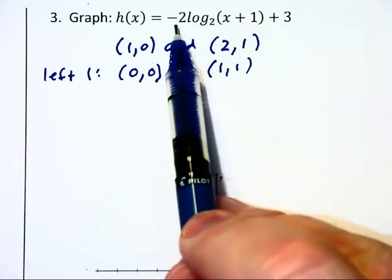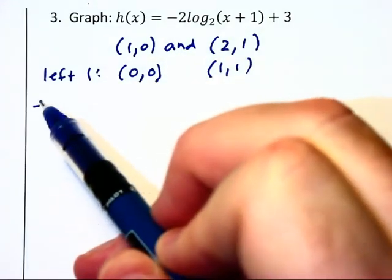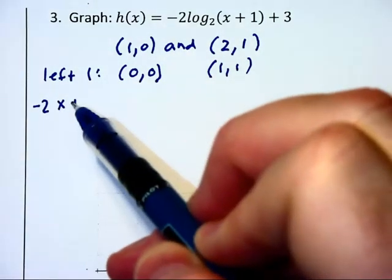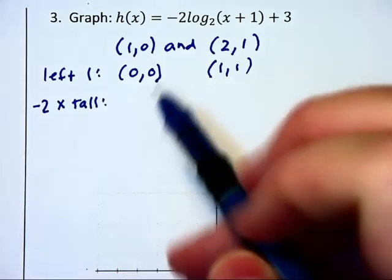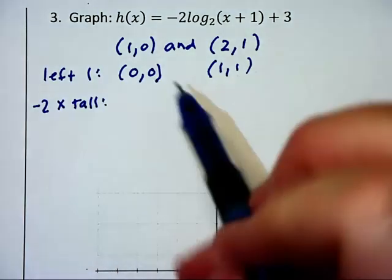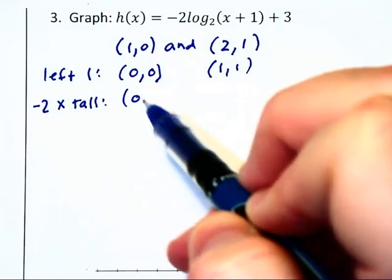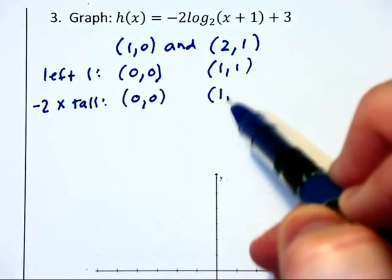We then look at the negative 2 out in front, and that basically tells us it's going to be negative 2 times as tall. I know that's kind of strange, but we'll take our y-values and multiply by negative 2. We have (0,0) and (1,-2).